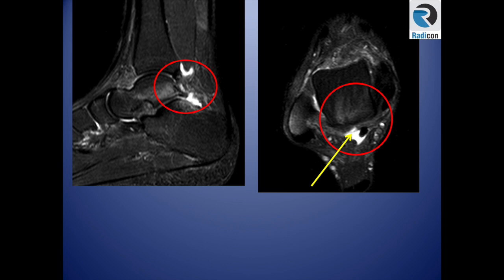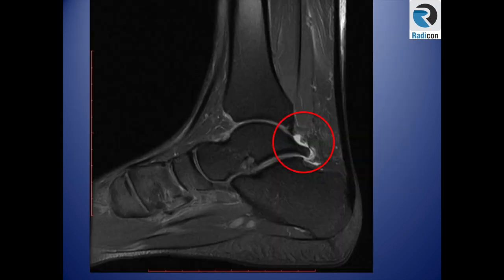In another case, you can see bone marrow edema at the posterior talus and the adjacent superior posterior calcaneum, with synovitis and fluid, as well as tenosynovitis of the flexor hallucis longus. Here is another example showing a prominent posterior process of the talus with surrounding fluid.